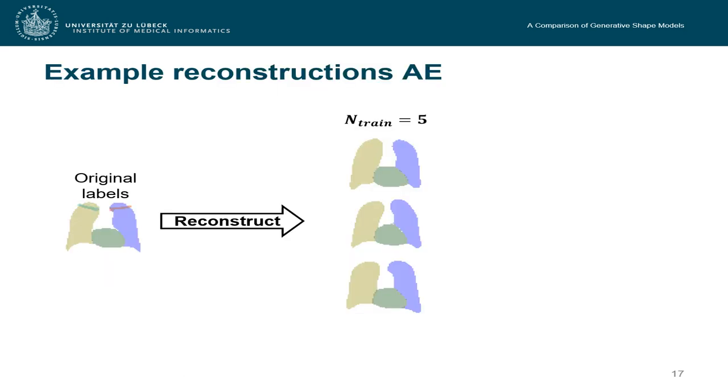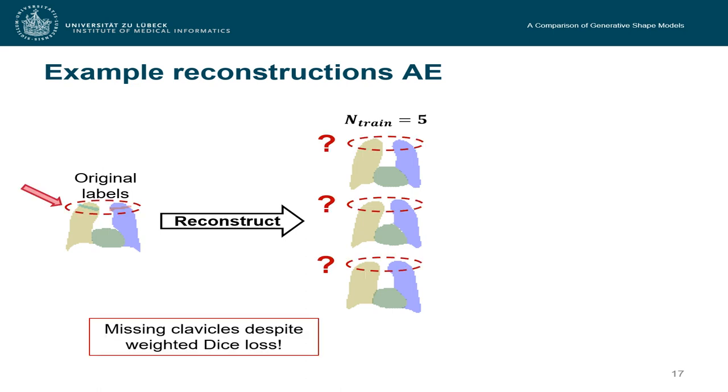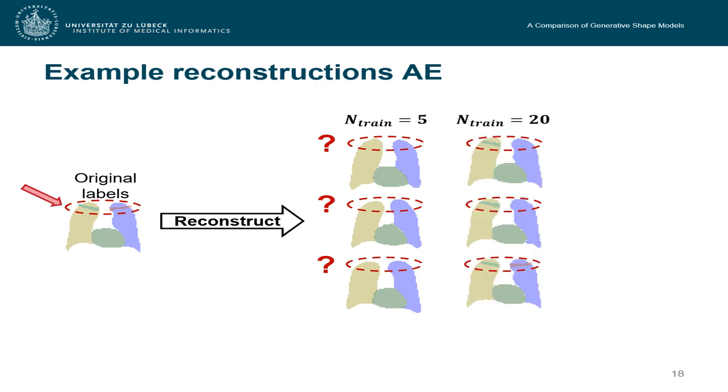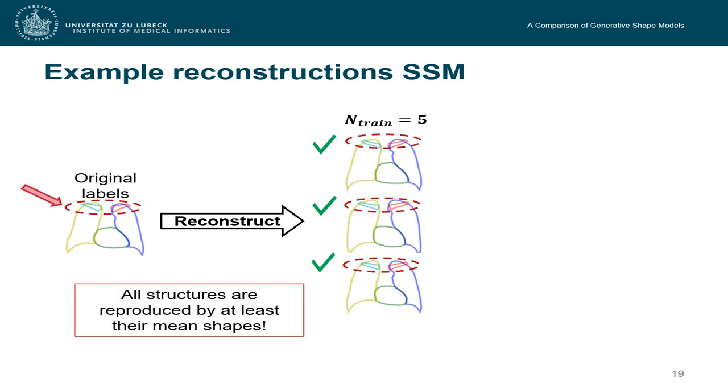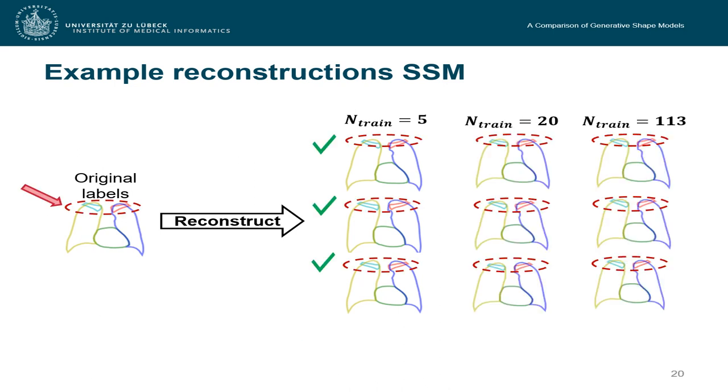This can also be seen in the generated data. So let's imagine we want to reconstruct those original labels with an autoencoder, which is trained only on five samples. We see that the small structures, the clavicles up there, never get reconstructed, even if we use weighted dice loss. And if we enlarge our training dataset, we see that the clavicles slowly but steadily get reconstructed. And in the end, they get reconstructed with a really high probability. This doesn't happen when we consider shape models. We see that no matter how small the dataset is, the clavicles always get reconstructed.